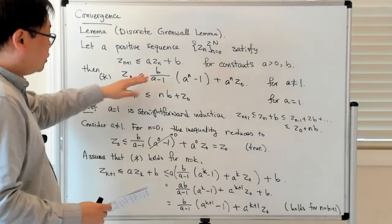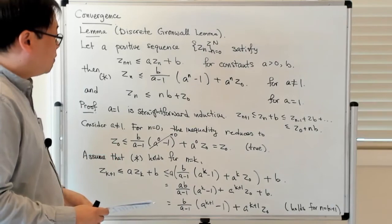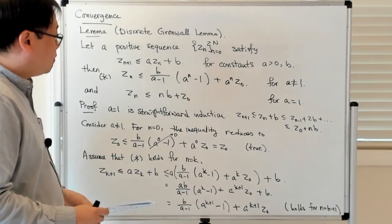What we're going to see is that we're going to use this to say something about the global error of a numerical method, and that global error goes to 0 as the time step goes to 0. Let me just stop here for now.